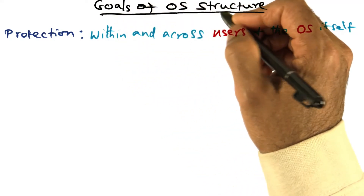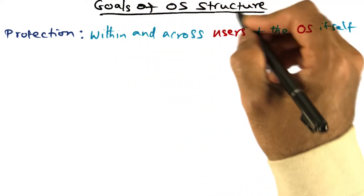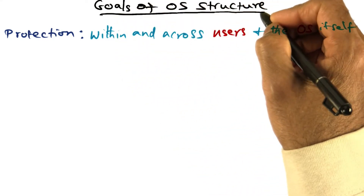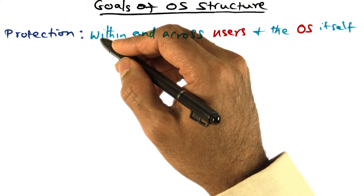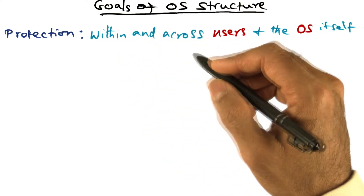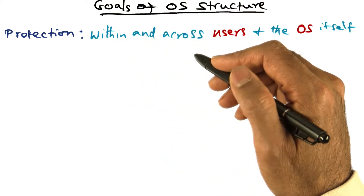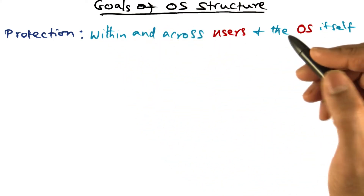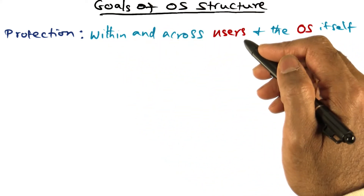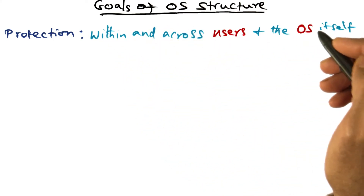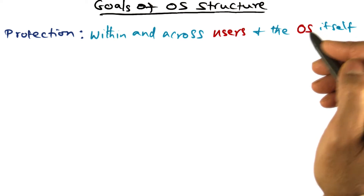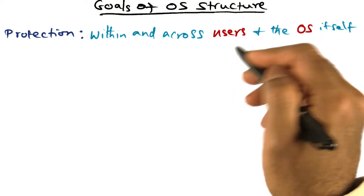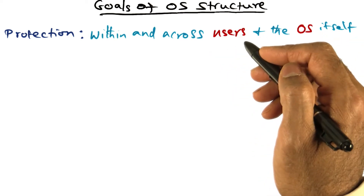Let's now elaborate on the goals of operating system structure. The first goal is protection. By protection, what we mean is protecting the user from the system, and the system from the user, and also users from one another.